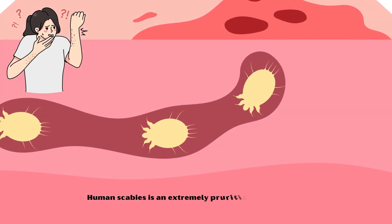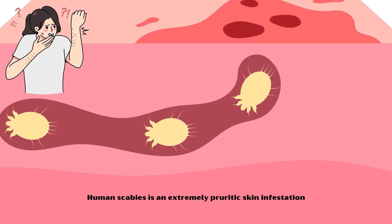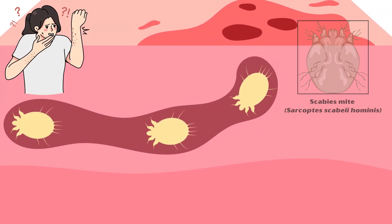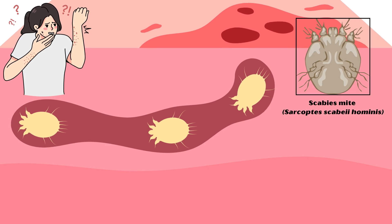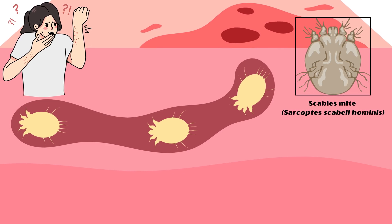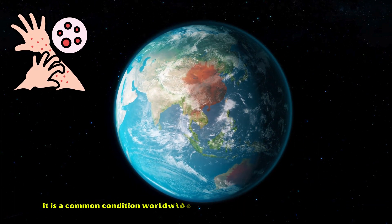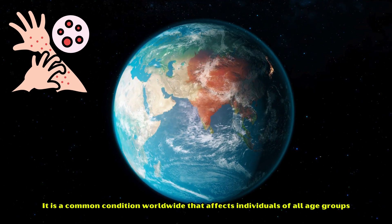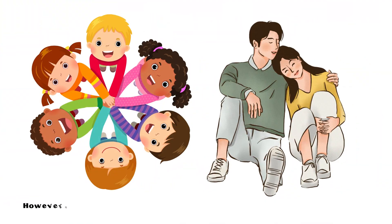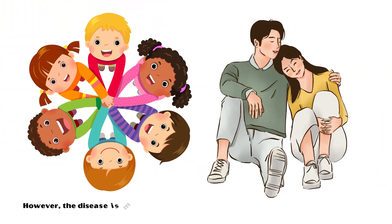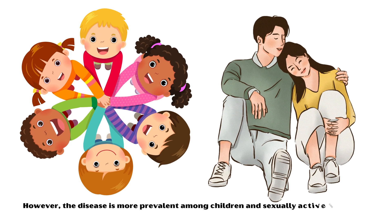Human scabies is an extremely pruritic skin infestation caused by the scabies mite, scientifically known as Sarcoptes scabii hominis. It is a common condition worldwide that affects individuals of all age groups. However, the disease is more prevalent among children and sexually active individuals.